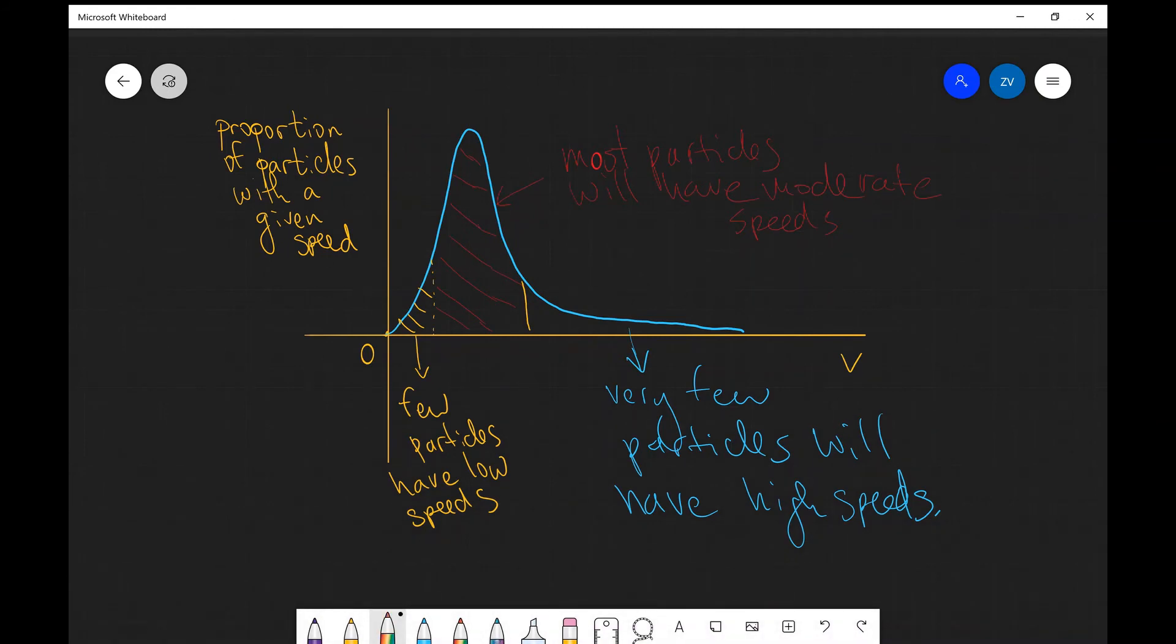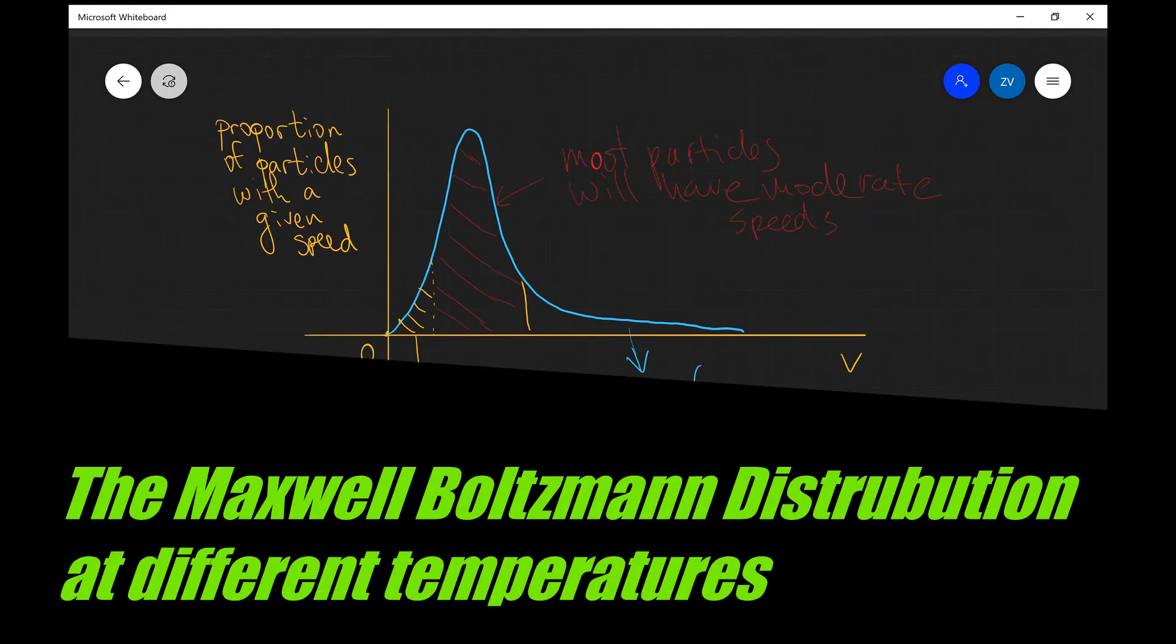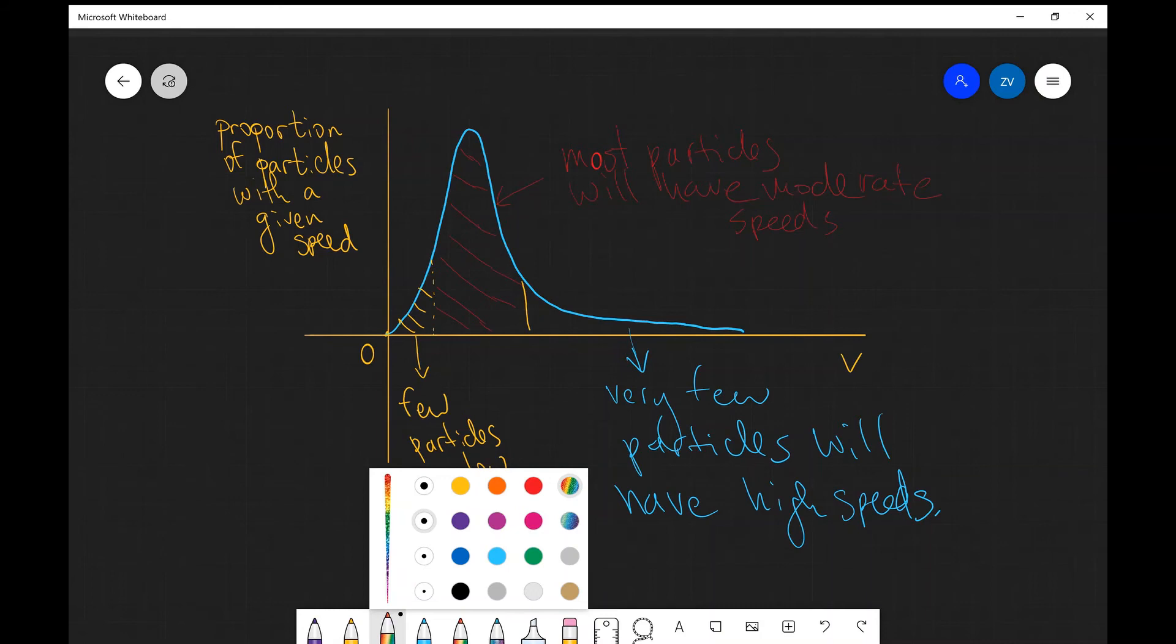Now what happens to the Maxwell Boltzmann distribution if I was to increase the temperature? Well, let's use my rainbow pen for this. If I was to increase the temperature, more particles are going to have higher velocities.